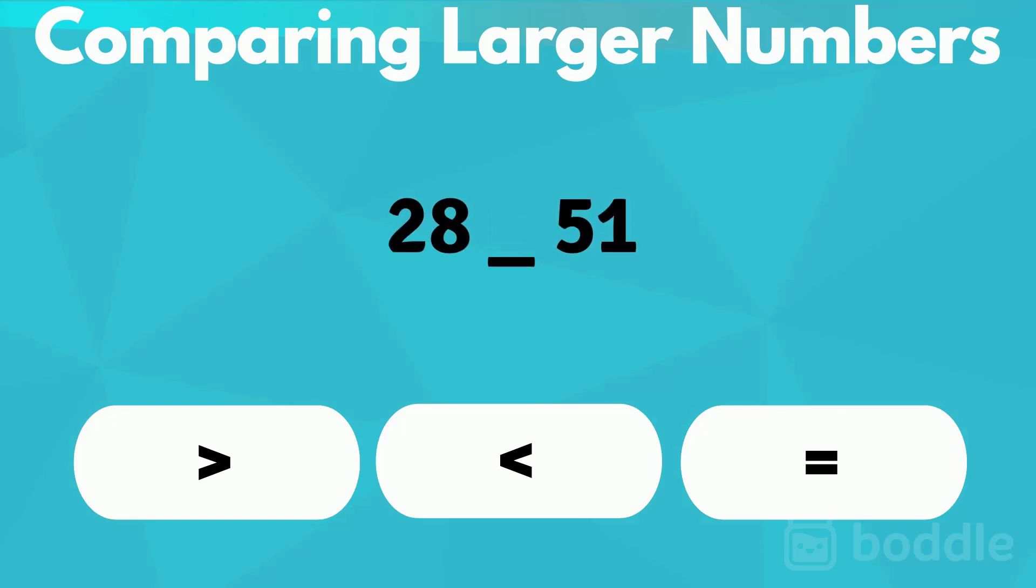Twenty-eight and fifty-one. Twenty-eight has two tens and eight ones. Fifty-one has five tens and one one. Since twenty-eight has less tens, it is less than fifty-one.